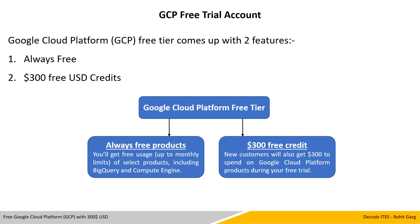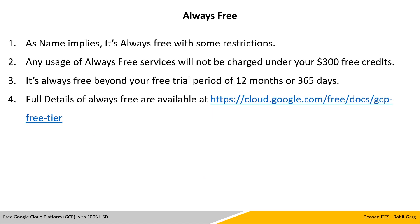Google Cloud Platform free tier comes with two features: always free and $300 USD credits. Always free, as the name implies, is always free with some restrictions. Any usage of always free services will not be charged under your $300 free credits. It's always free beyond your free trial period of 12 months or 365 days.